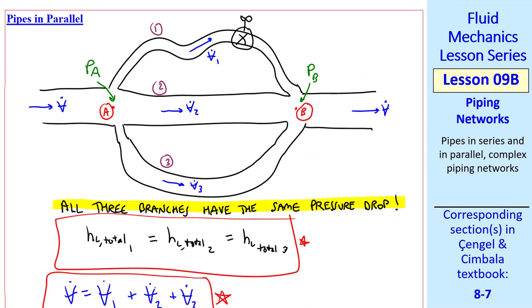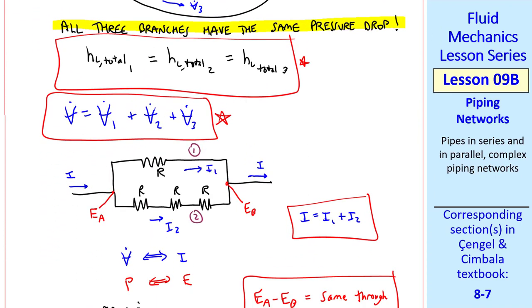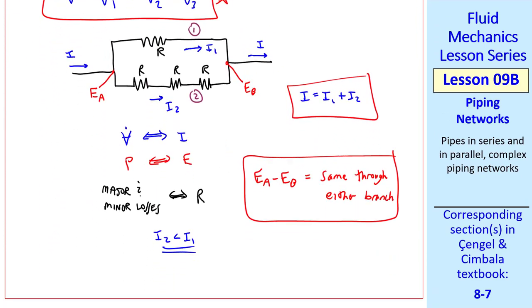This is a very simple pipe flow, but even then you'd have to calculate three different values of Darcy friction factor, since the Reynolds number in each of these three pipes would be different, as will Epsilon over D. So there are more calculations involved, but in principle it's not that difficult.